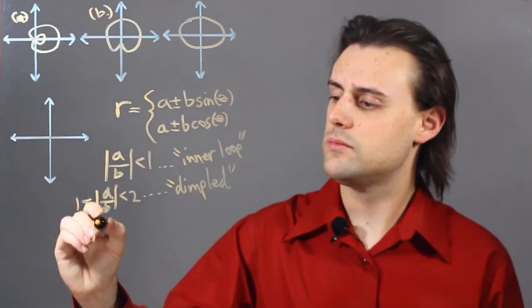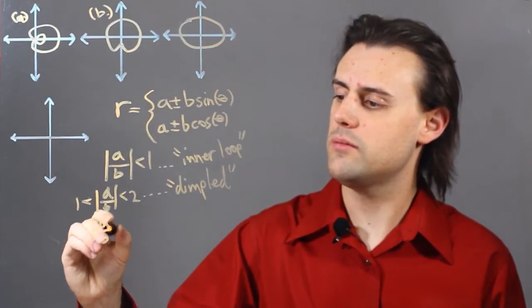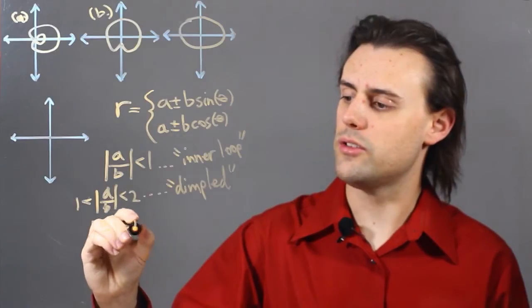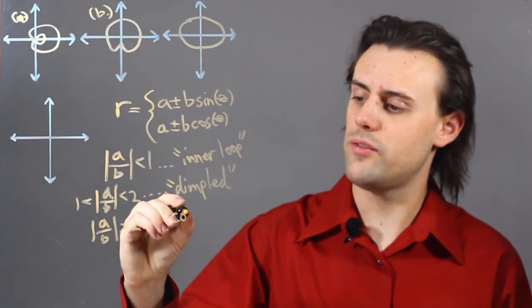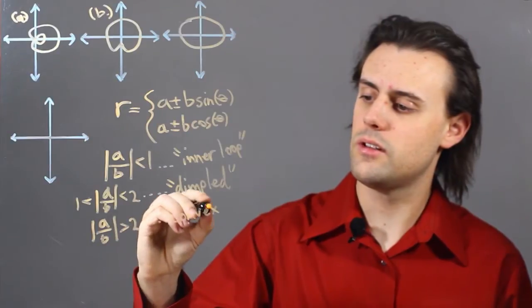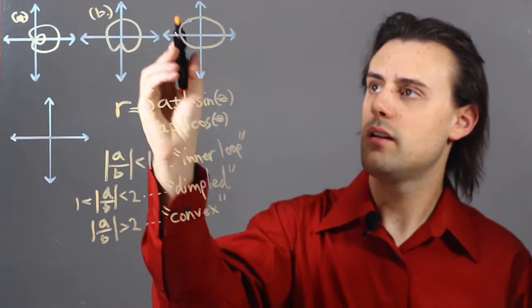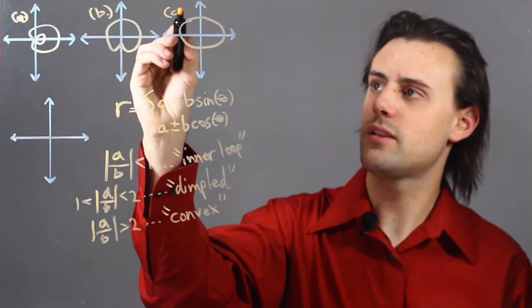Finally, if the ratio of a over b is greater than 2, then we call that figure a convex Limasson, which is this third case, case c.